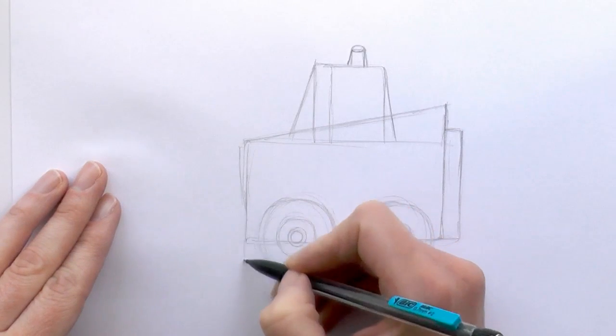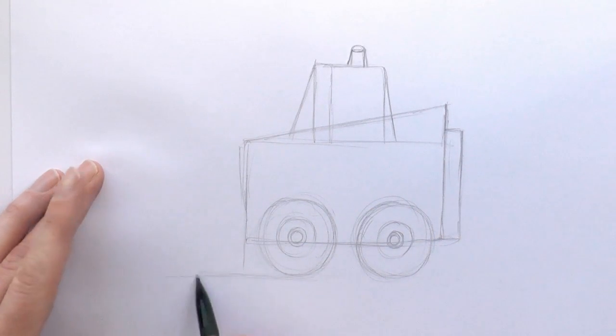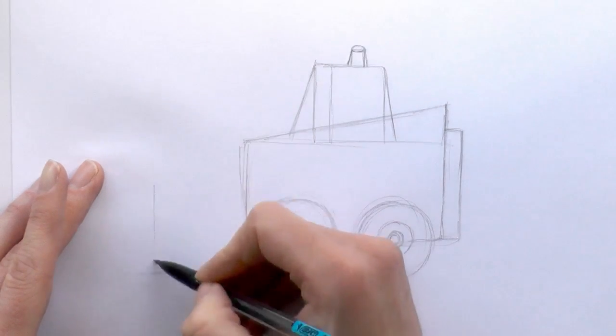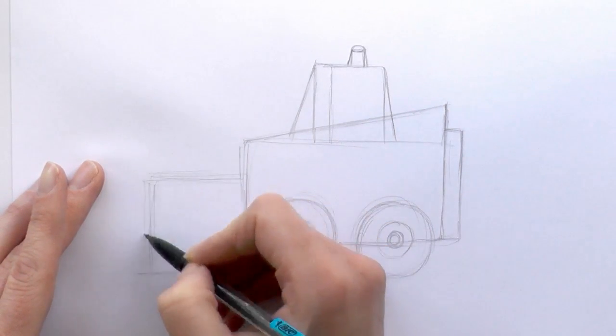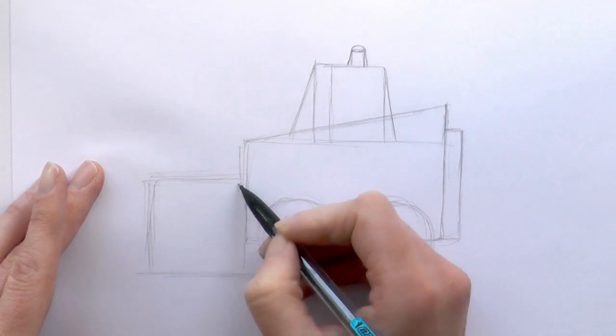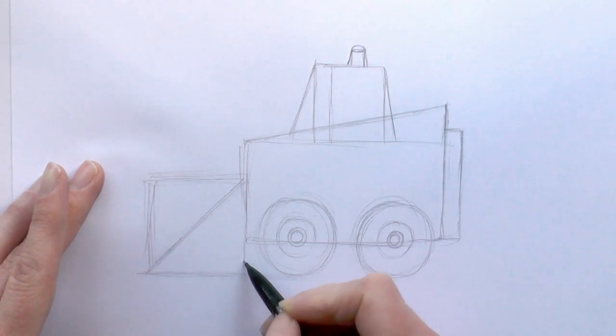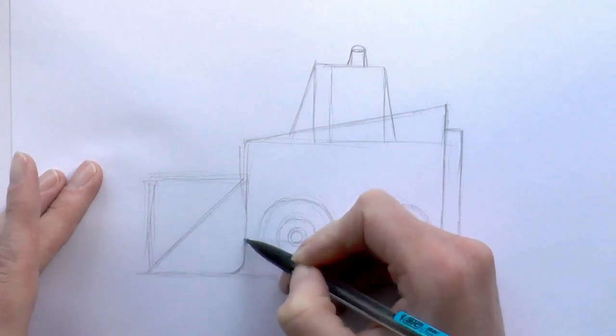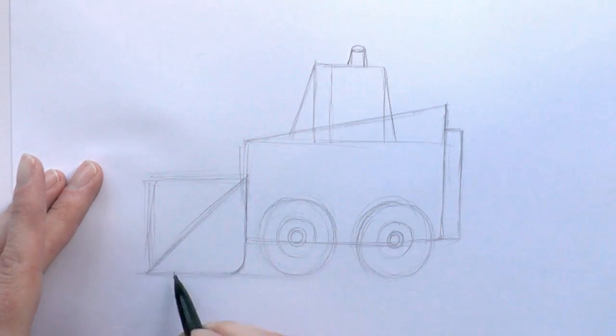Now for the digger bit, we just draw—kind of find the line where those wheels are touching—and then we draw a square shape out the front, and then bring a line down to dissect that and round that corner there. And then that's the loader, the digger bit.